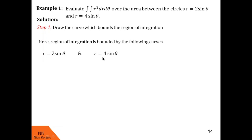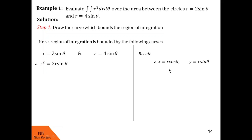Both of these curves are circles, and to draw them we need their centers and radii, so we convert to Cartesian equations. For r = 2 sinθ, we multiply throughout by r to get r² = 2r sinθ. Recalling that r² = x² + y² and r sinθ = y, we get x² + y² = 2y, which gives x² + y² − 2y = 0.